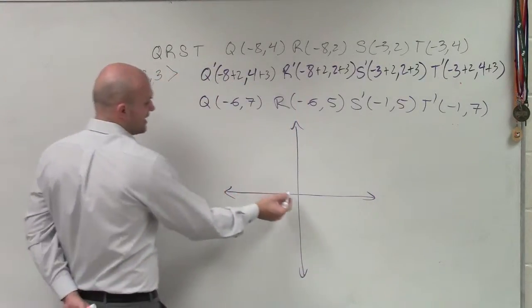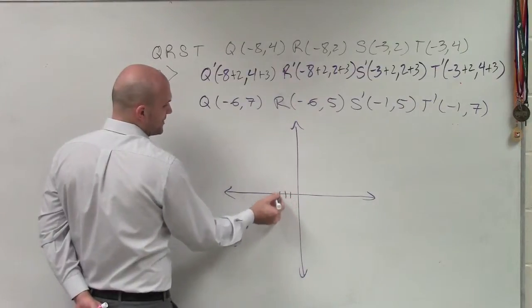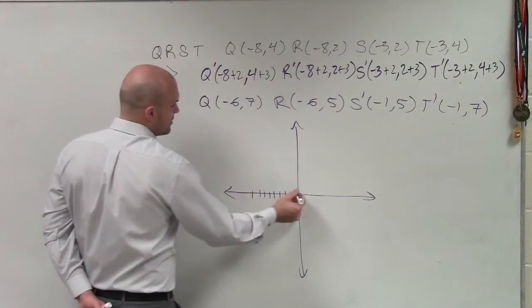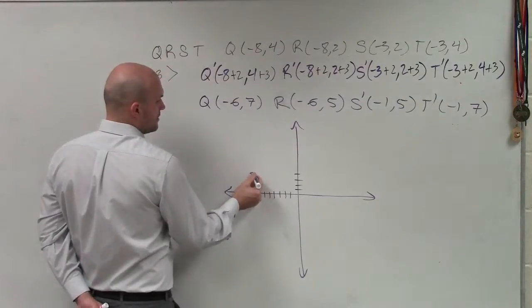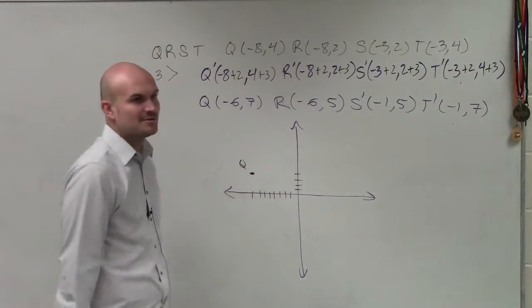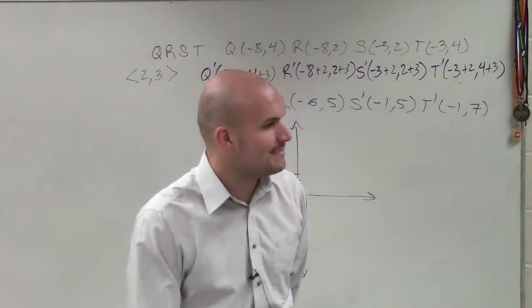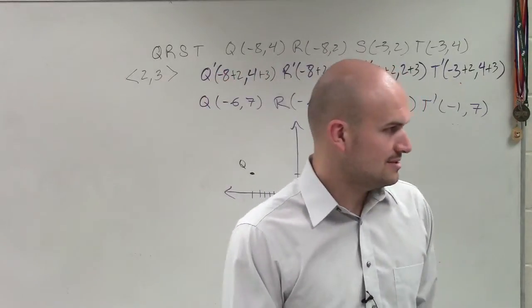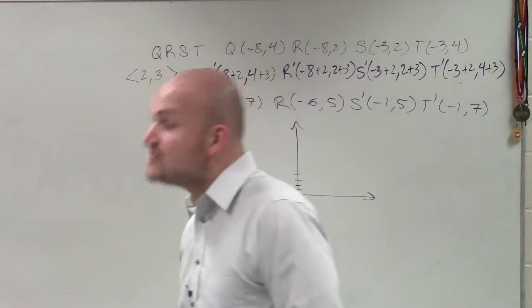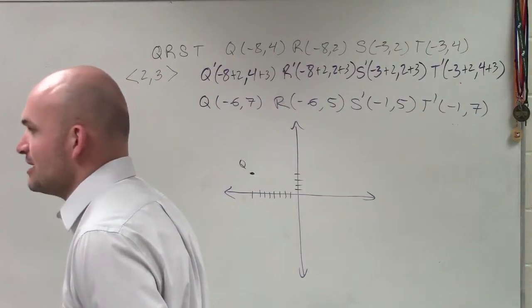So what I have here is Q is negative 8. So I'm going to go 1, 2, 3, 4, 5, 6, 7, 8. 1, 2, 3, 4. Now, notice, ladies and gentlemen, do you see how I labeled my point? It's really, really, really important when you guys are doing transformations.